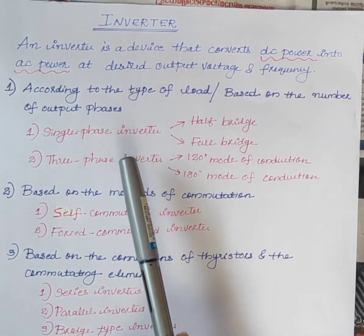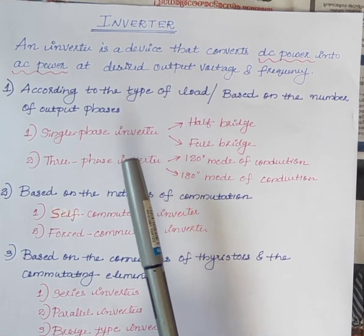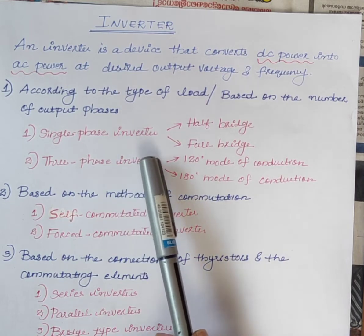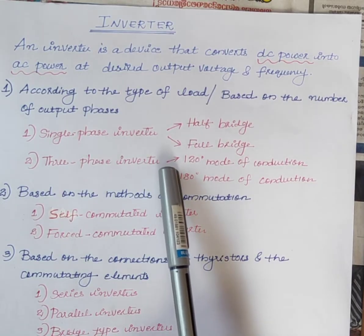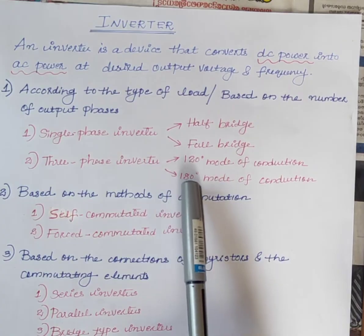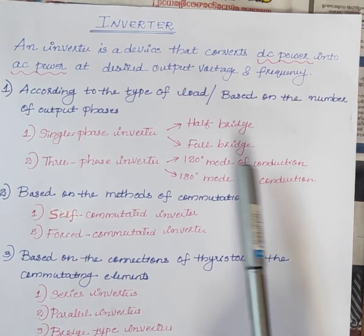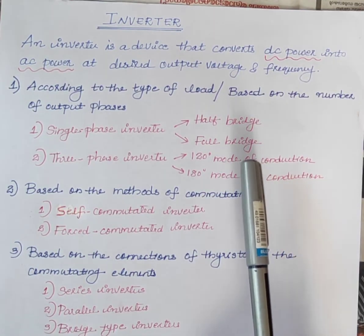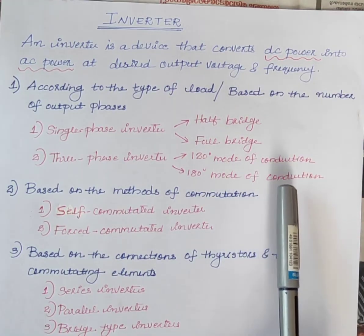Generally, three phase AC supply is used in industries and the load is three phase. Therefore, three phase inverters are used to run the load. These are again classified into two: 120 degree mode of conduction and 180 degree mode of conduction. In 120 degree mode of conduction, the conduction time of all the thyristors is 120 degrees. Similarly, in 180 degree mode of conduction, the conduction time for all thyristors is 180 degrees.